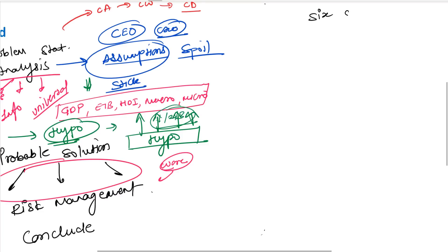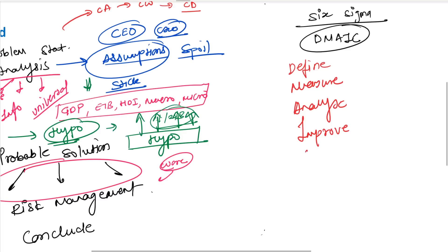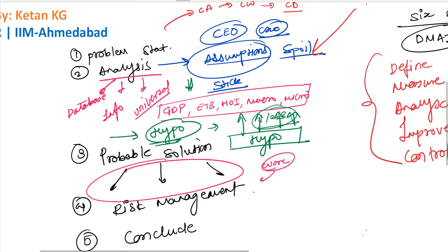There's something called Six Sigma, which provides a very effective tool called DMAIC. DMAIC means: Define — you define the problem; Measure — you measure the intensity of the problem and its cost; Analyze — you analyze the data; Improve — which is essentially your solution; and Control — you take care of it, making sure the problem never occurs in the future. So you can either use this case study flow or the DMAIC framework. Anything will work great for you.